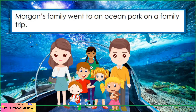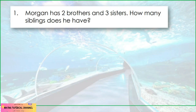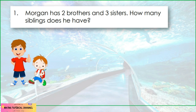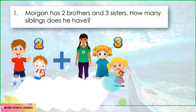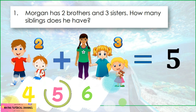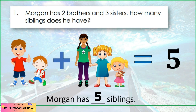Morgan's family went to an ocean park on a family trip. First problem: Morgan has two brothers and three sisters. How many siblings does he have? Let's add them. Choose your answer from the choices. The answer is five! You did a great job! Morgan has five siblings.